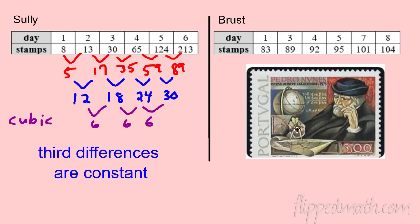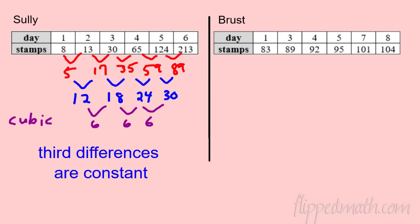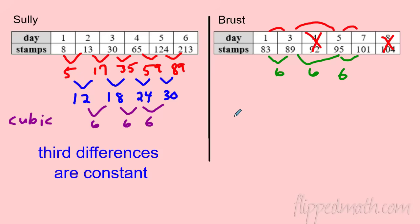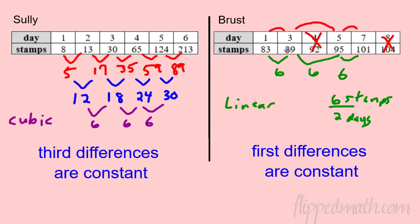Be careful with Mr. Brest — the days listed are 1, 3, 4, 5, which aren't evenly spaced. We need to look at evenly spaced intervals. Counting by twos — from day 1 to 3 to 5 to 7 — the stamp difference is consistently 6 each time. So the first differences are constant, making this linear: 6 stamps every two days.